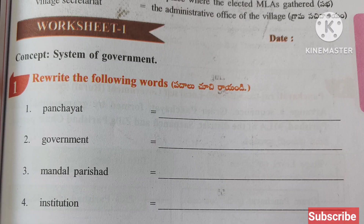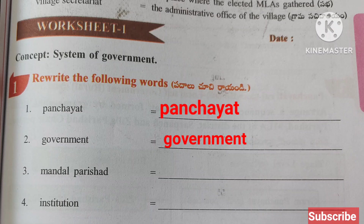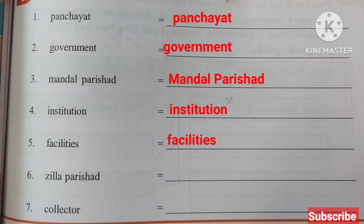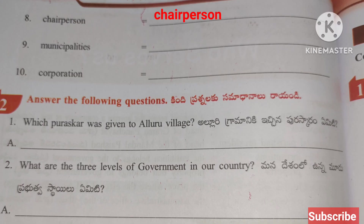Worksheet One: Rewrite the following words — Panchayat, Government, Mandal Parishad, institution, facilities, Zilla Parishad, Collector, Chairperson, Municipalities, Operation.